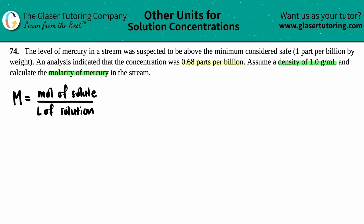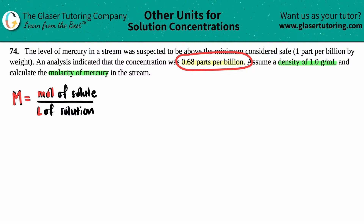So I have to find moles of solute and divide by liters of solution. We're specifically talking about mercury, which is Hg. They're telling us we have 0.68 parts per billion.